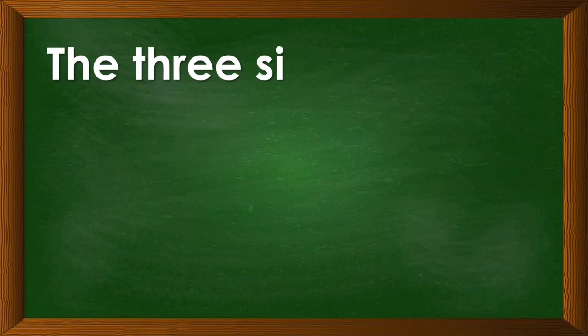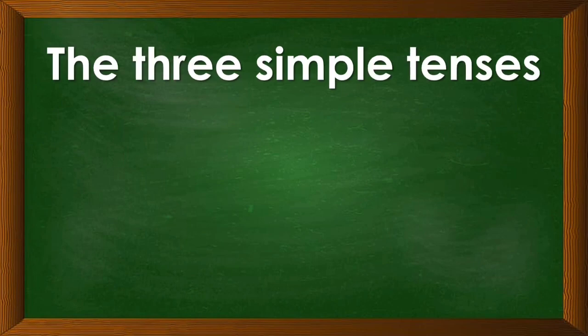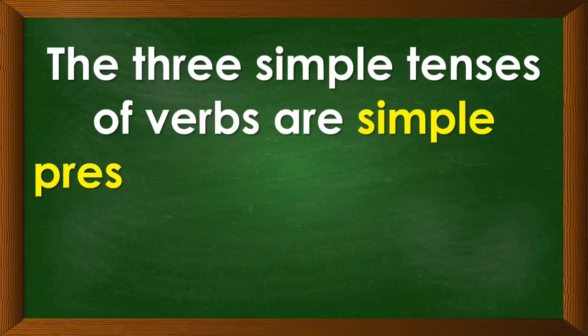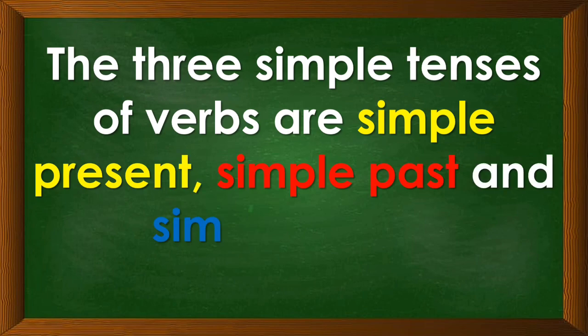Let us remember the three simple tenses of verbs. These are simple present, simple past, and simple future.